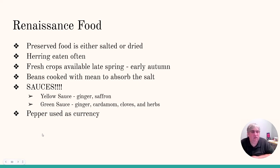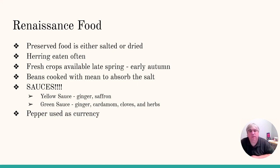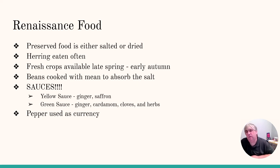Renaissance food — it was not very tasty. It was all either very salty or dried like beef jerky. Fish like herring would be eaten if you're on the coast, and the only time you really get fresh crops and fresh food is late spring to early autumn, very shortly after the harvest. Beans are cooked a lot because beans will absorb the salt. Very often there's a big pot of stuff that people just throw things into and take out — a constant stew or soup that just goes on for weeks, if not months. They did have sauces much like we have ketchup and mustard: they had yellow sauce and green sauce. The yellow sauce was made with ginger and saffron — kind of like a curry. The green sauce had ginger, cardamom, cloves, and herbs — kind of like a pesto. And pepper — black pepper was so valuable that it was used as a currency, and the Age of Exploration very much happens because of the desire and the value of black pepper.